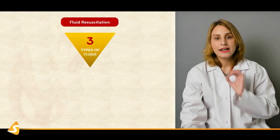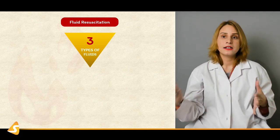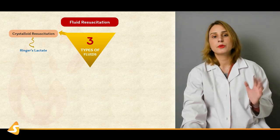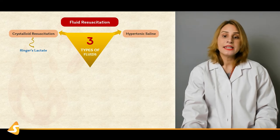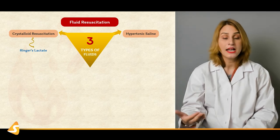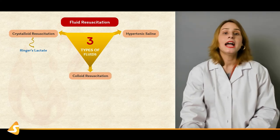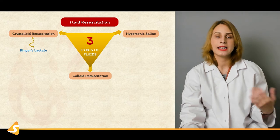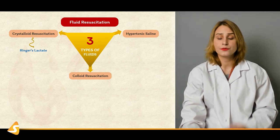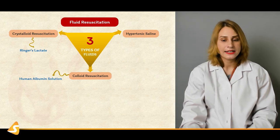Then fluid resuscitation — the type of fluid is very important. We have hypertonic fluids, colloids, and crystalloids. Mostly crystalloids like Ringer's lactate are used in trauma patients or burn victims. Then there is hypertonic saline — in these burn patients there is a chance of developing hyponatremia, so hypertonic saline can be given to deal with a hyponatremic crisis. In colloid resuscitation, human albumin is used. There are different formulas for calculation of colloid fluids and crystalloid solutions. Most commonly, human albumin solution is used as a colloid and Ringer's is used as a crystalloid; hypertonic saline can also be used.